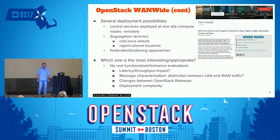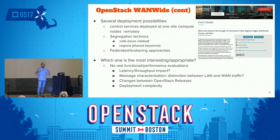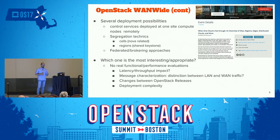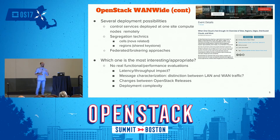The scenario we choose to investigate keeps all control services in the central data center and remotely deploys compute nodes. There are more advanced strategies presented on Monday. The goal is to take one scenario and investigate it from the performance perspective. The questions we'd like to address are: what can be the impact of latency and throughput? Can we characterize the messages exchanged between different sites? How can we perform experiments across different OpenStack versions and deal with the complexity of OpenStack?